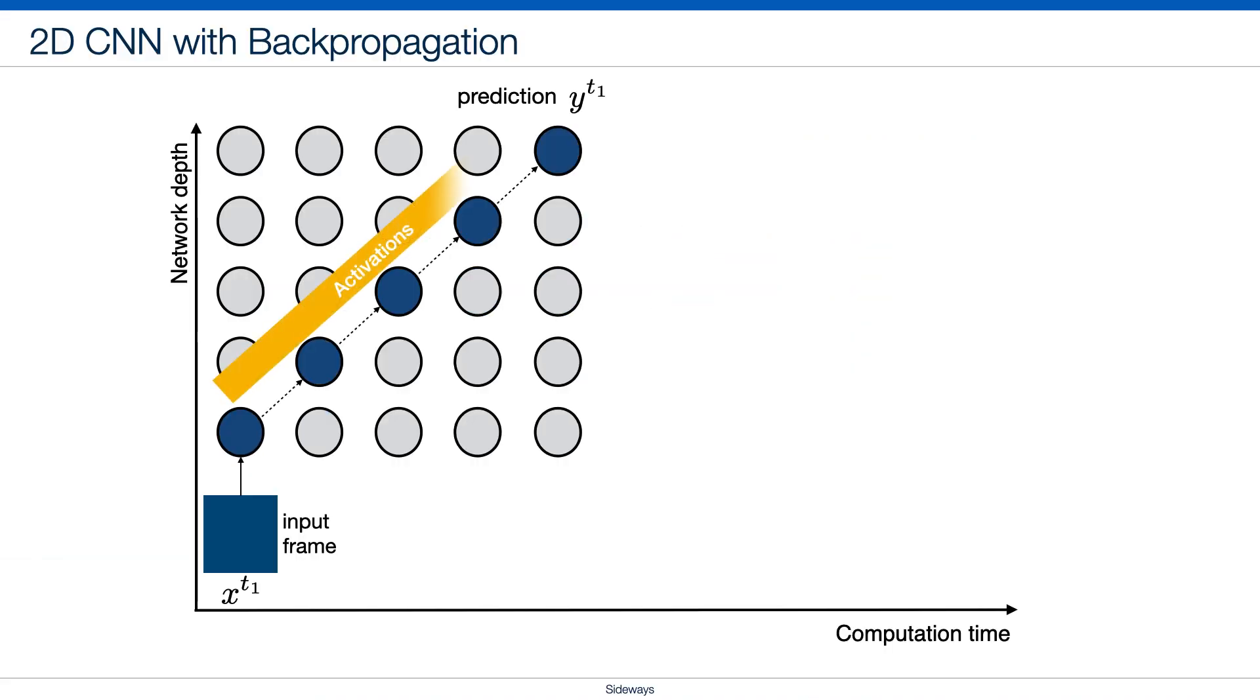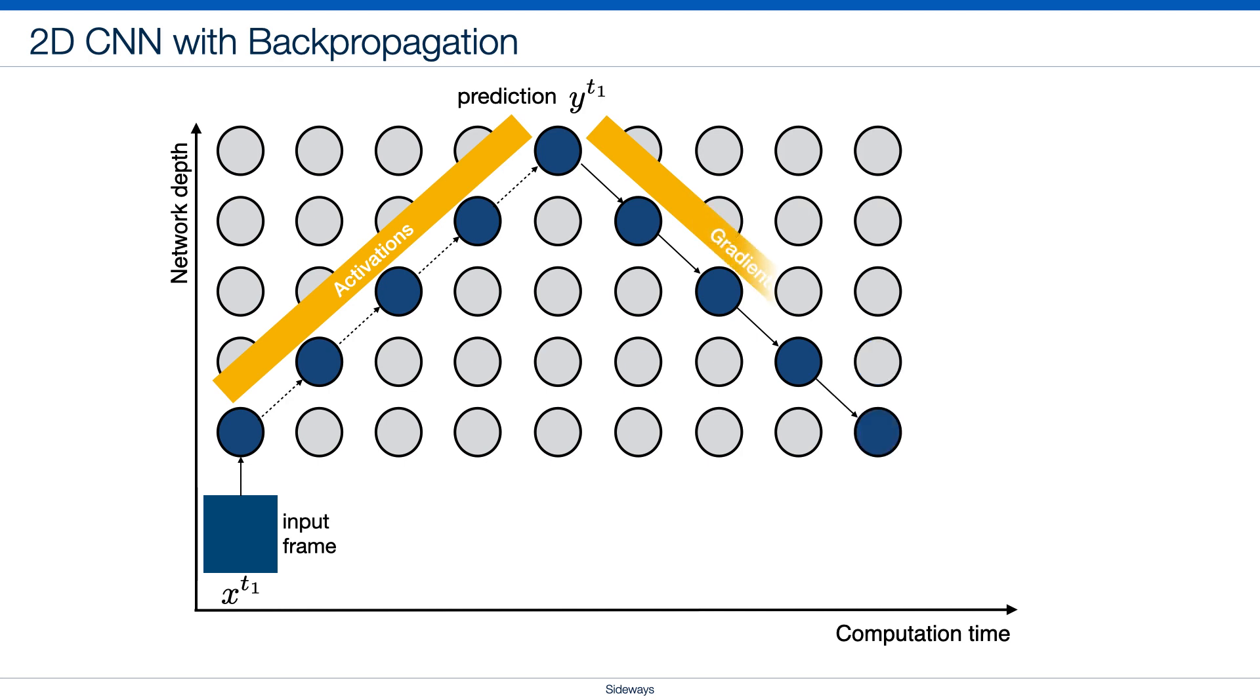In Backprop, we first compute activations during the forward paths. Here depicted going from bottom, the blue input frame, to top. Next, we compute gradients from top to bottom.